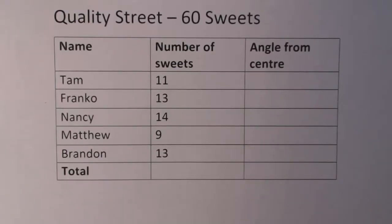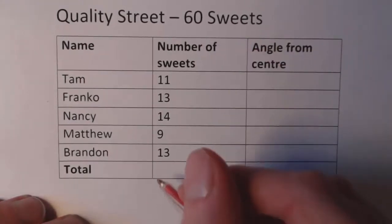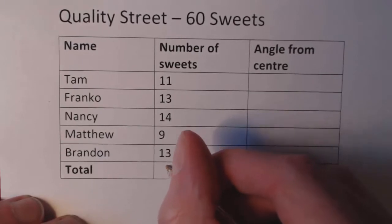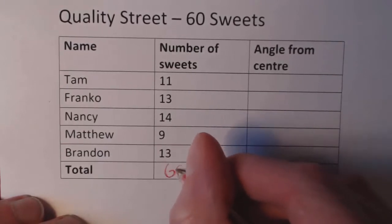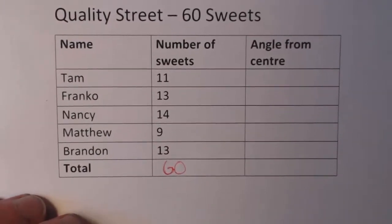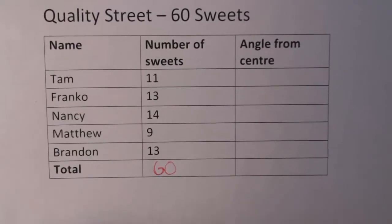We got Tam got eleven sweets, Franko got 13, Nancy got 14, Matthew just got nine, and Brandon got 13. You know these are the correct set of numbers because you want to just double check, tally it up and it should add up to 60.